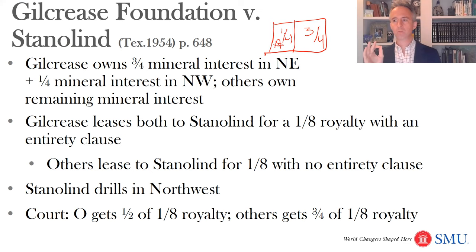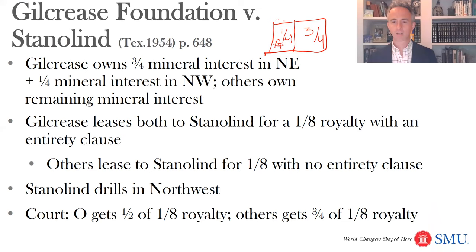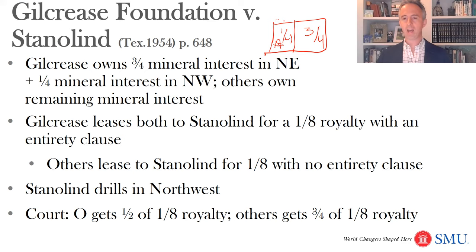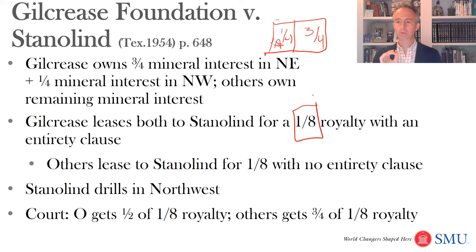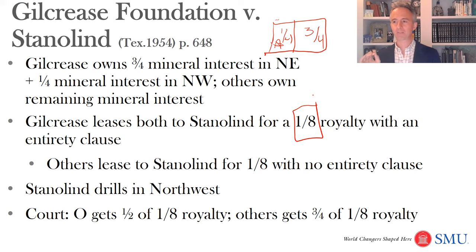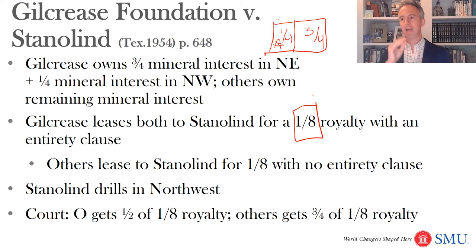By contrast, the other parties don't have an entirety clause, so that other party is going to get fully three-quarters of that oil. The result is that Staniland is going to have to pay more than a one-eighth royalty: it has to pay one-half of one-eighth to Gilcrease, but three-quarters of one-eighth to the other parties. Ultimately, Staniland ends up paying five-fourths of that one-eighth royalty — five thirty-seconds — an extra thirty-second in royalty because of this entirety clause. The problem is, although entirety clauses can help you deal with some of the pain caused by non-apportionment, they can still get you into trouble when you have an entirety clause with some owners of a well but not with others.